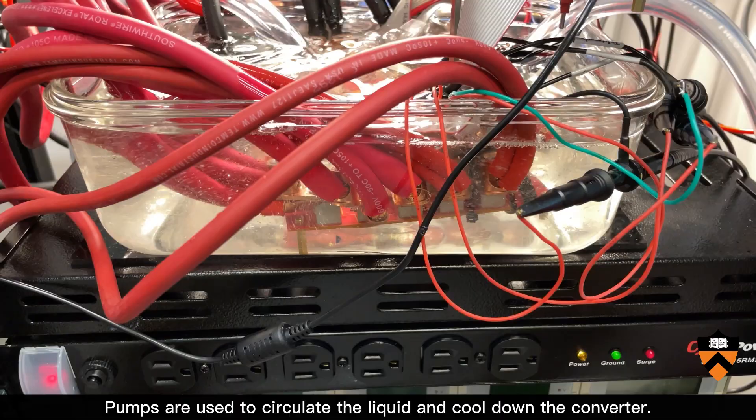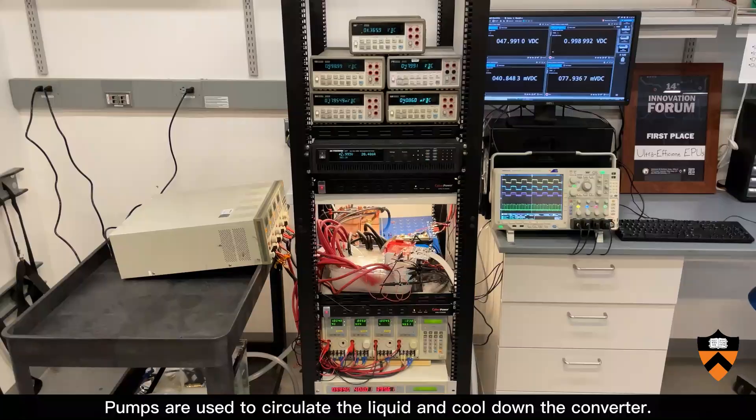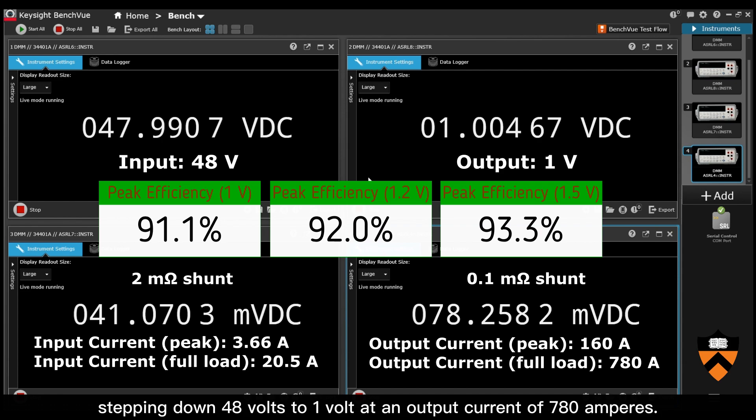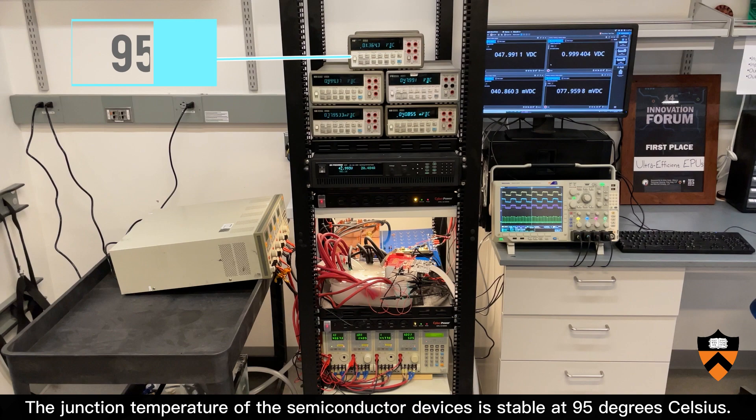Pumps are used to circulate the liquid and cool down the converter. The system is shown running at its full load condition under liquid cooling, stepping down 48 volts to one volt at an output current of 780 amps. The junction temperature of the semiconductor devices is stable at 95 degrees Celsius.